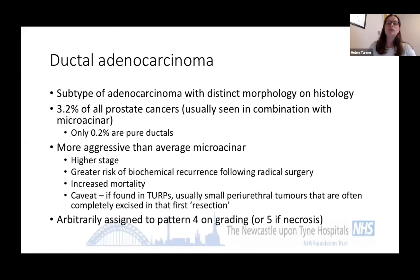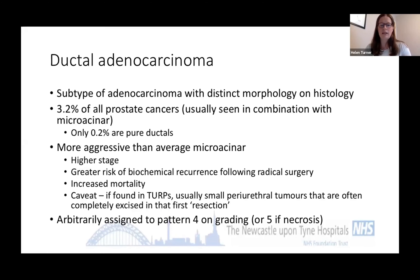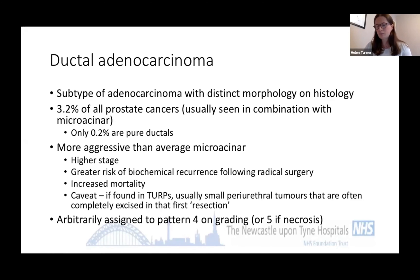Ductal adenocarcinoma is another subtype of prostate cancer with distinct morphology. It's very rarely seen on its own — usually in combination with usual acinar carcinoma — but it is more aggressive than a normal tumour. We do give this a Gleason score, and it receives a Gleason score of four. So if ductal adenocarcinoma is present, it will be reflected in the final Gleason score, and you should be thinking about intermediate or high-risk stratification for that patient.